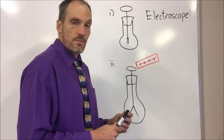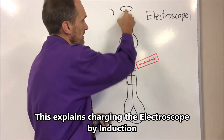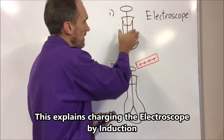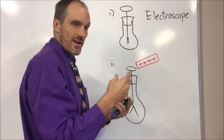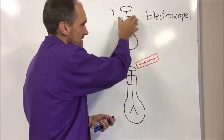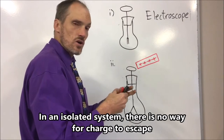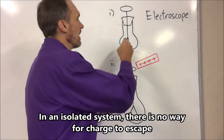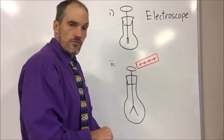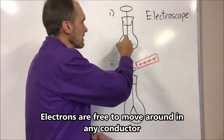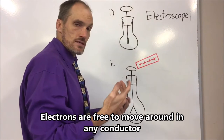Now let's explain what is happening with the electroscope. The electroscope — that's the metal bit in the middle. The glass beaker and the rubber stopper just create an isolated system where the charge can't escape anywhere. Because it's metal, the electrons are freely mobile — they are able to move around. We have a balance of positive and negative charge, so the electroscope is itself neutral to start with.